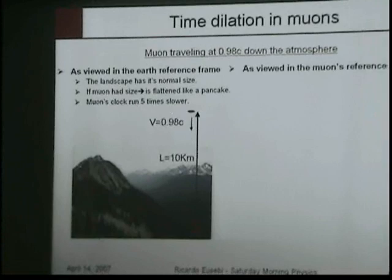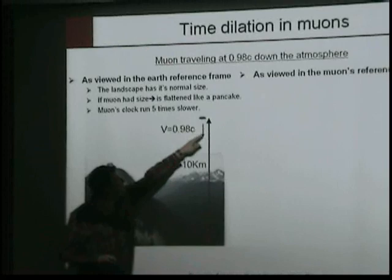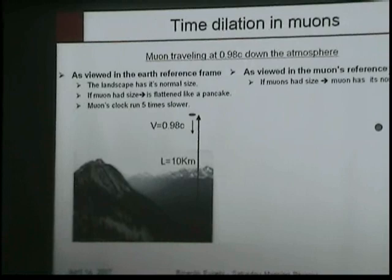And the muon clock, the way you see it, is running five times slower. So instead of traveling only two kilometers, it travels ten before decaying.